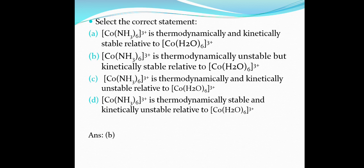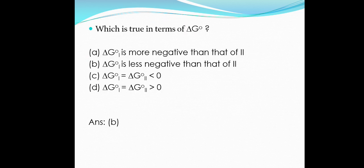The next question concerns which is true in terms of ΔG⁰. The correct option is B: ΔG⁰ of reaction 1 is less negative than ΔG⁰ of reaction 2. We know that a more negative Gibbs free energy means a more spontaneous process. Reaction 2 takes place in seconds, while reaction 1 is far less spontaneous, so reaction 2 has a more negative ΔG⁰ than reaction 1.